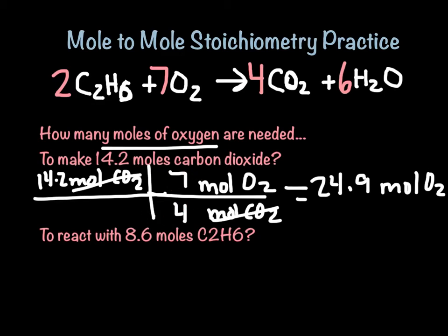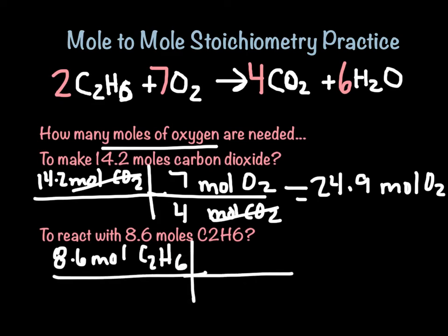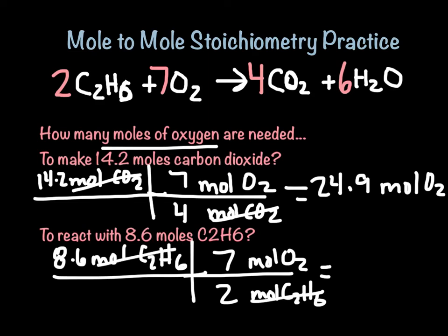Why don't you pause it right now and try the next one? You could watch me do it all day long, but it doesn't really do you any good. The answer is 8.6 moles of C2H6. Going through the action line, moles of C2H6 on the bottom, moles of O2 on top. I copy my numbers — seven and two — from the balanced chemical equation. Moles of C2H6 cancel out. In two sig figs, I get 30. moles of O2.